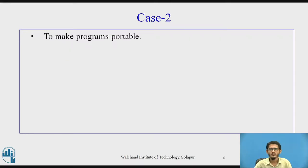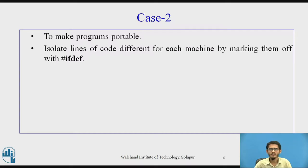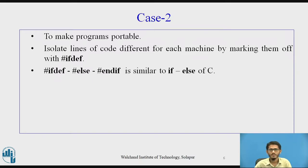The second case is to make programs portable — if we have code intended to run on a particular machine. We can isolate lines of code for different machines by marking them off with the #ifdef preprocessor directive. #ifdef, #else, and #endif work together like the if-else block in C language.